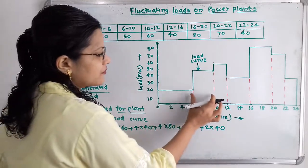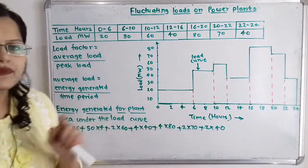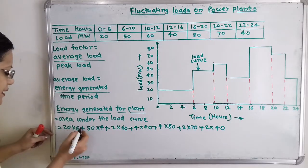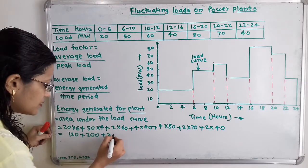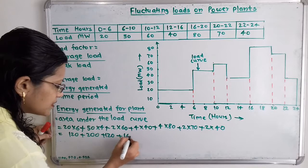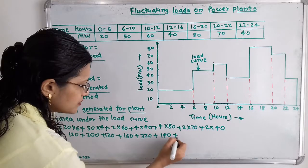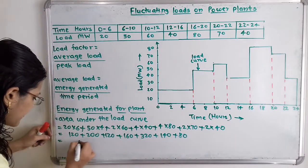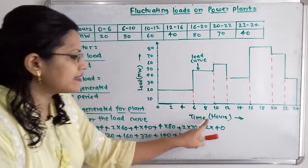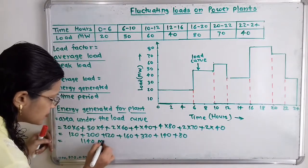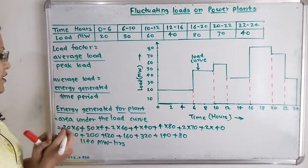Calculating: 20×6=120, plus 200, plus 60×2=120, plus 160, plus 320, plus 140, plus 80. Adding all these gives 1140. The unit is megawatt-hours. So the energy generated for the plant is 1140 megawatt-hours.